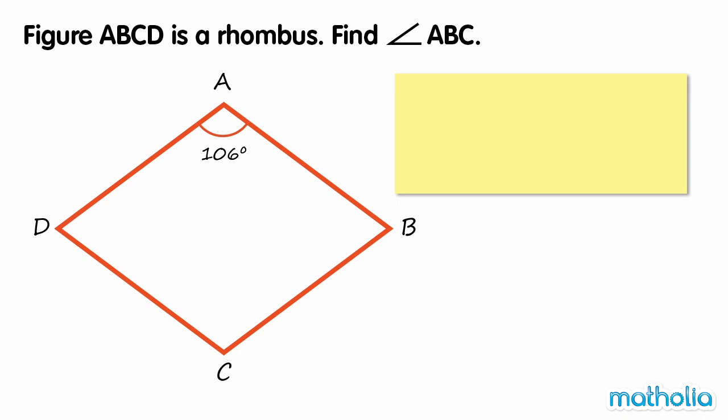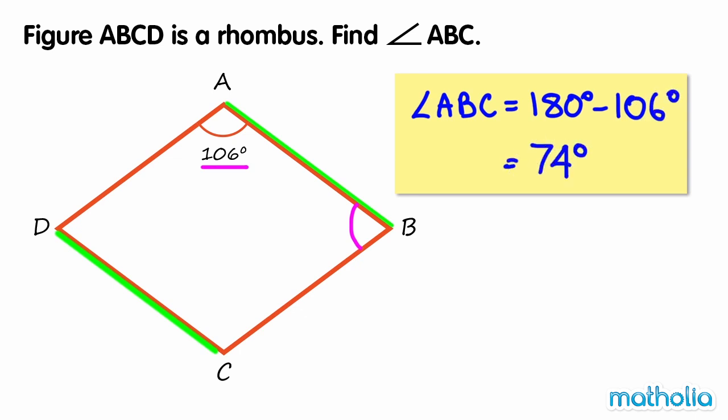Figure ABCD is a rhombus. Find angle ABC. Note that angle ABC and angle DAB are between the parallel lines AB and DC, so their sum is 180 degrees. Angle ABC is equal to 180 degrees minus 106 degrees, which equals 74 degrees.